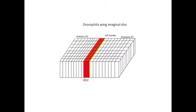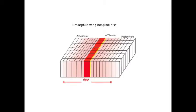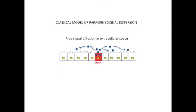It is expressed in rows of anterior cells that flank the AP compartment border of wing imaginal disc and patterns the disc into adult wing. DPP disperses away from the source and distributes in concentration gradients to activate threshold-dependent responses in the recipient cells. The classical model of paracrine signaling assumes that signals like DPP disperse by free diffusion.